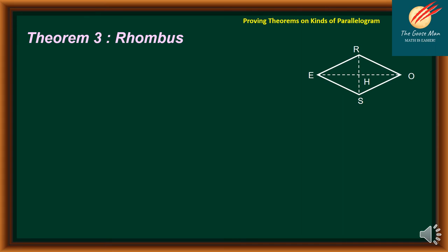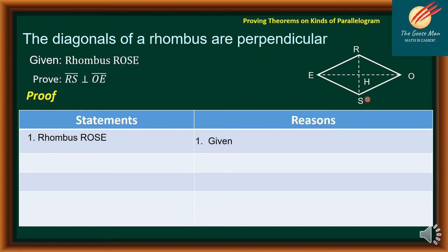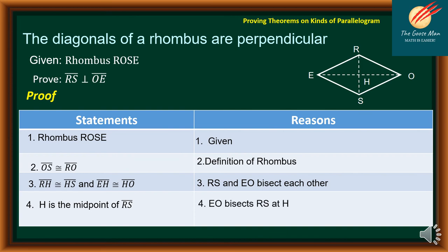Let's move on to Theorem 3 for the rhombus, which states that the diagonals of a rhombus are perpendicular. Given rhombus ROSE, we would like to prove that RS is perpendicular to line segment OE. Statement 1: rhombus ROSE — reason: given. Statement 2: OS is congruent to RO, and ER is congruent to ES — reason: definition of rhombus. Statement 3: RH is congruent to HS, and EH is congruent to HO, because RS and EO bisect each other. Statement 4: H is the midpoint of line segment RS — reason: EO bisects RS at H.